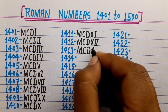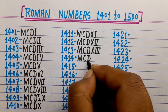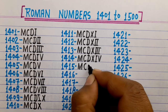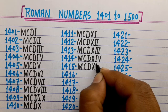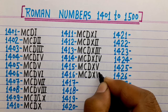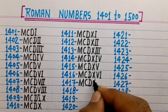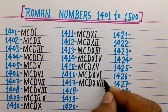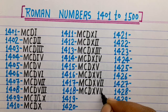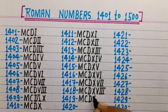1413 is MCDXIII. 1414 is MCDXIV. 1415 is MCDXV. 1416 is MCDXVI. 1417 is MCDXVII. 1418 is MCDXVIII. 1419 is MCDXIX.